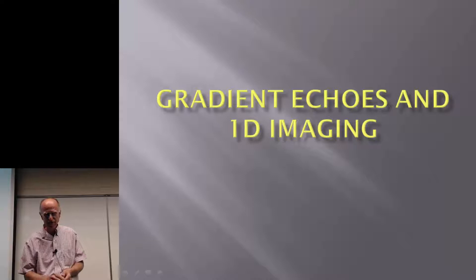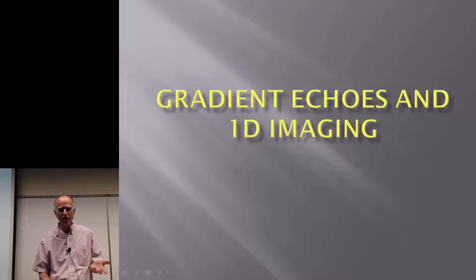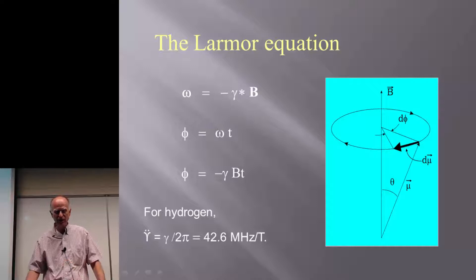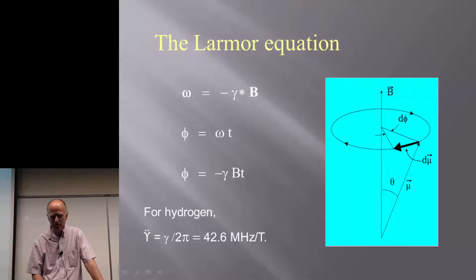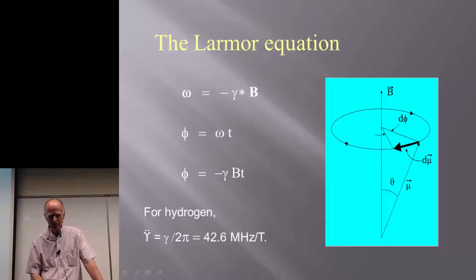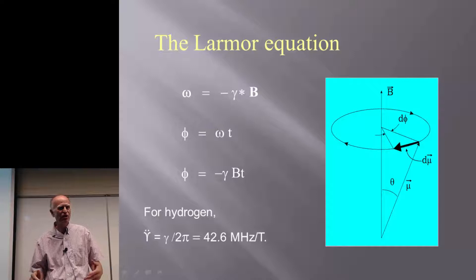So how can we use this to do imaging? We're going to start with a very simple idea: gradient echoes in one-dimensional imaging, just to get the concept across. Let's go back to the Larmor equation and rewrite this. Instead of just writing omega equals minus gamma B, let's replace phase as omega t, and replace omega with gamma B, so phase equals minus gamma B t. The longer you wait, the more phase you have precessed through. Remember that the gyromagnetic ratio gamma-bar — gamma divided by 2 pi — is 42.6 megahertz per tesla. So at 2 tesla, you're at 85.2 megahertz, right up into the FM range.